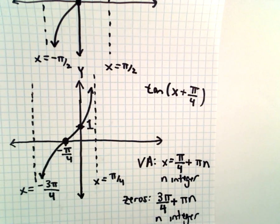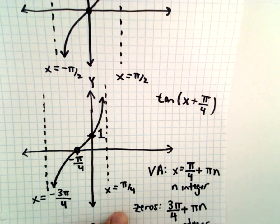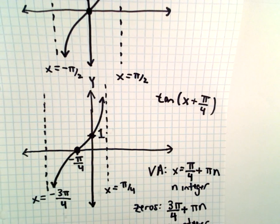But that's all there is to it. Just the same graph as tangent x, it's just been nudged to the left by pi over 4 units.